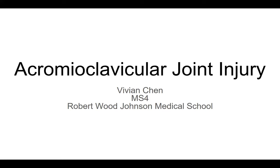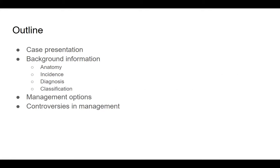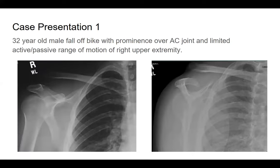Next, Vivian presents on acromioclavicular joint injuries. The case: a 32-year-old male who fell off his bike had prominence over his AC joint and limited active and passive range of motion in the right upper extremity. Radiographs showed pretty significant displacement of the AC joint.